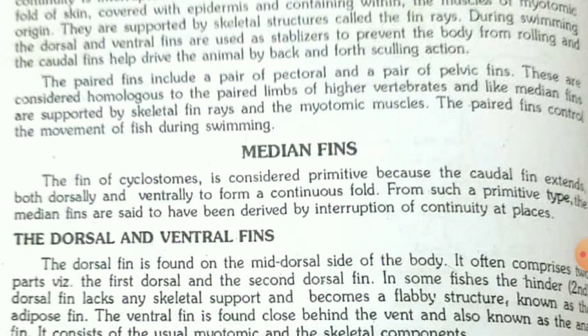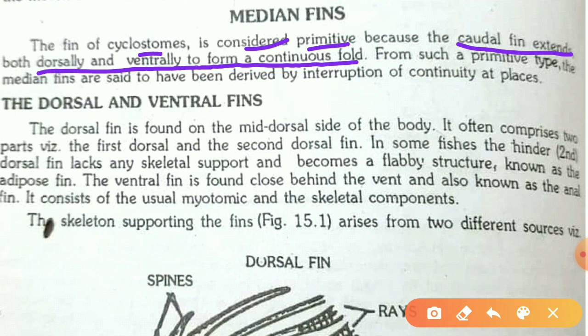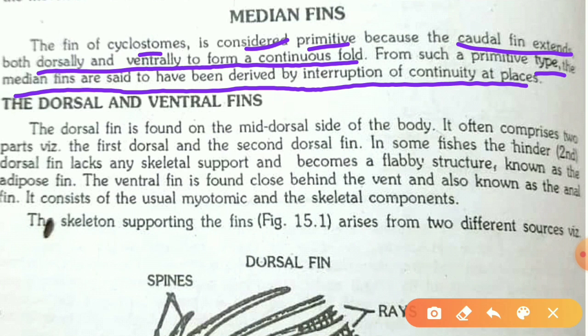In median fins, fins of cyclostomes are considered primitive because the caudal fin extends both dorsally and ventrally to form a continuous fold. Cyclostomes are organisms which have a rounded mouth. From such a primitive type, the median fins are said to have been derived by interruption of continuity at places, meaning there was a single fin that was interrupted at certain positions to form separate median fins.